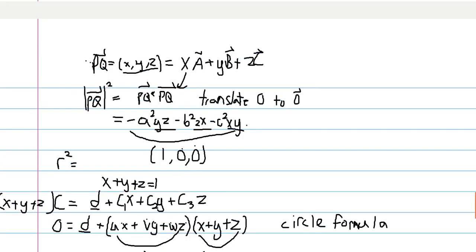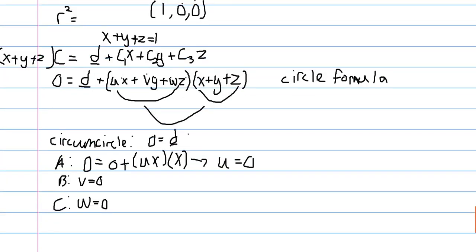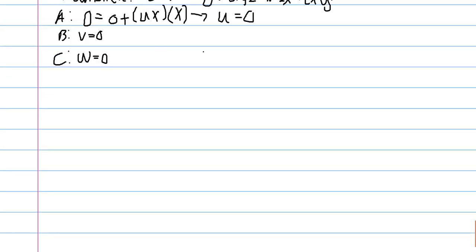And for our sakes, we can get rid of all these negatives. So, we also have that 0 is equal to A squared YZ plus B squared ZX plus C squared XY. This is the equation of the circumcircle.